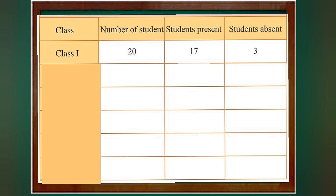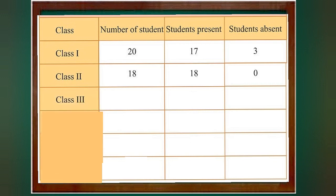The number of students in class 2nd is 18; there are 18 present students and 0 absent students. The total number of students in class 3rd is 23; there are 22 present students and 1 absent student. The total number of students in class 4th is 22; there are 20 present students and 2 absent students.